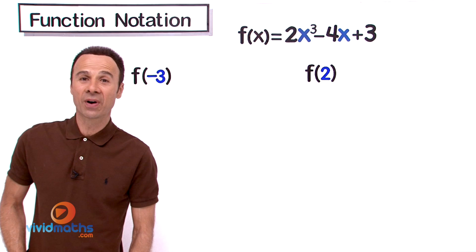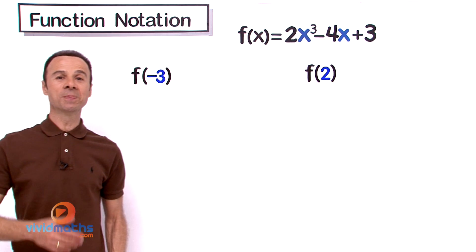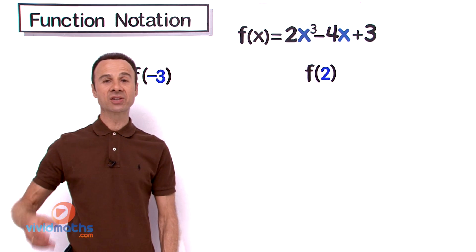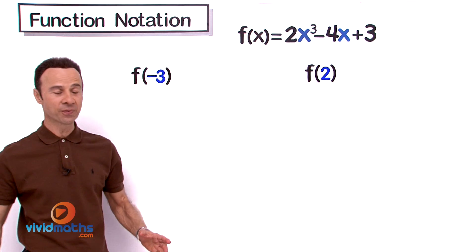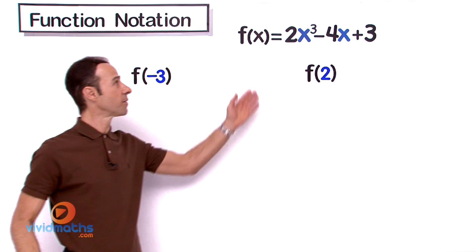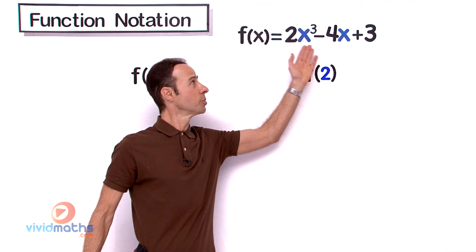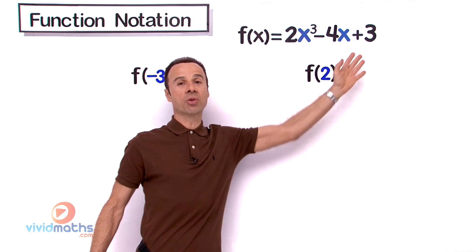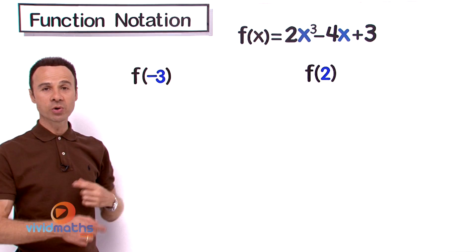Hi guys, welcome to function notation. In this particular example, we are going to execute two substitutions into the function f(x) = 2x³ - 4x + 3. We are going to substitute and process function f(-3) and function f(2) straight into that function.